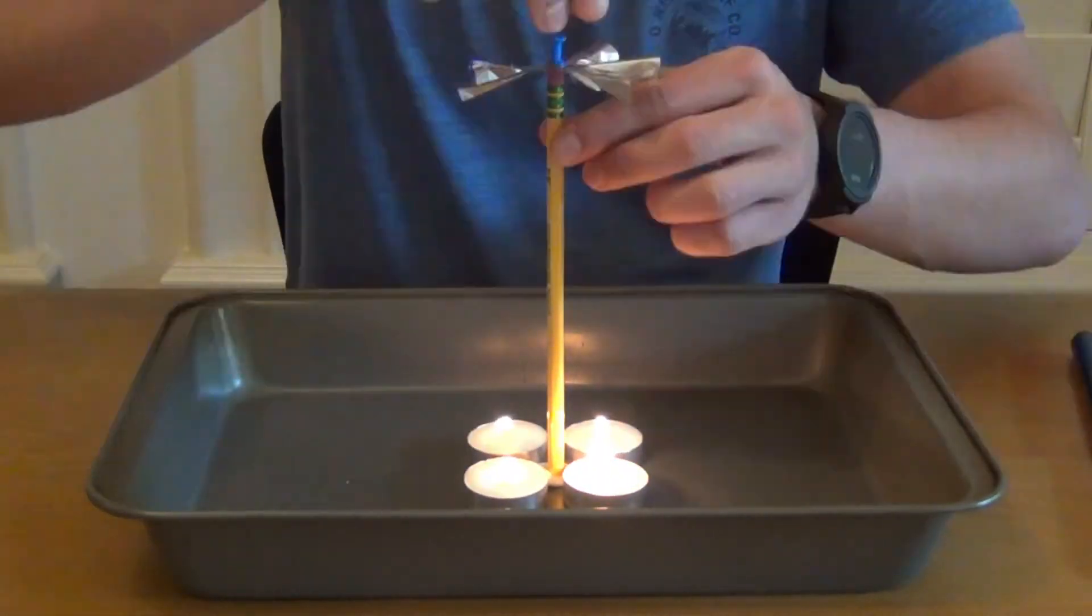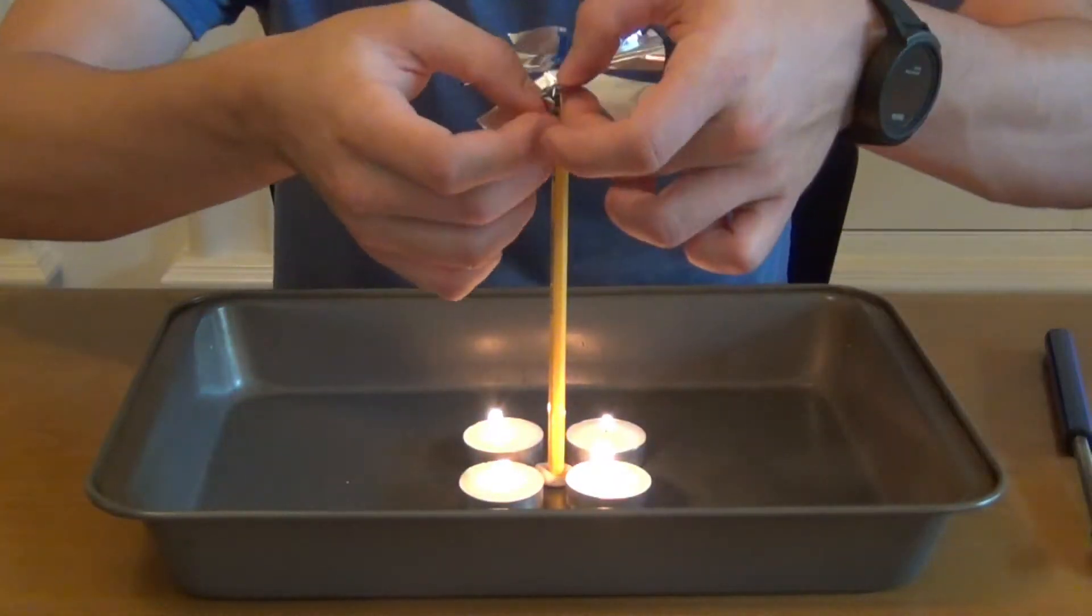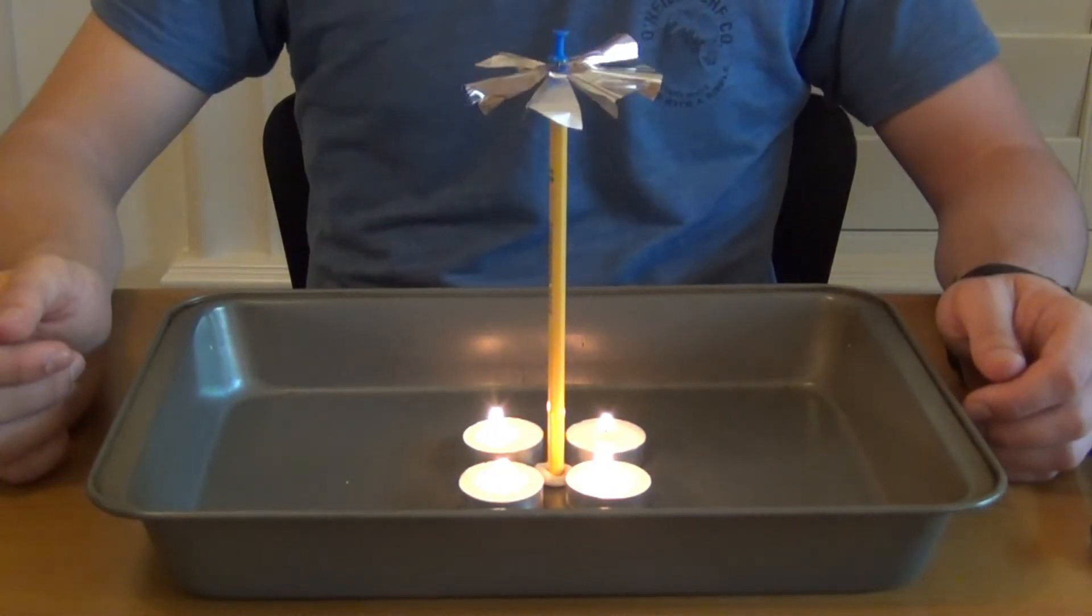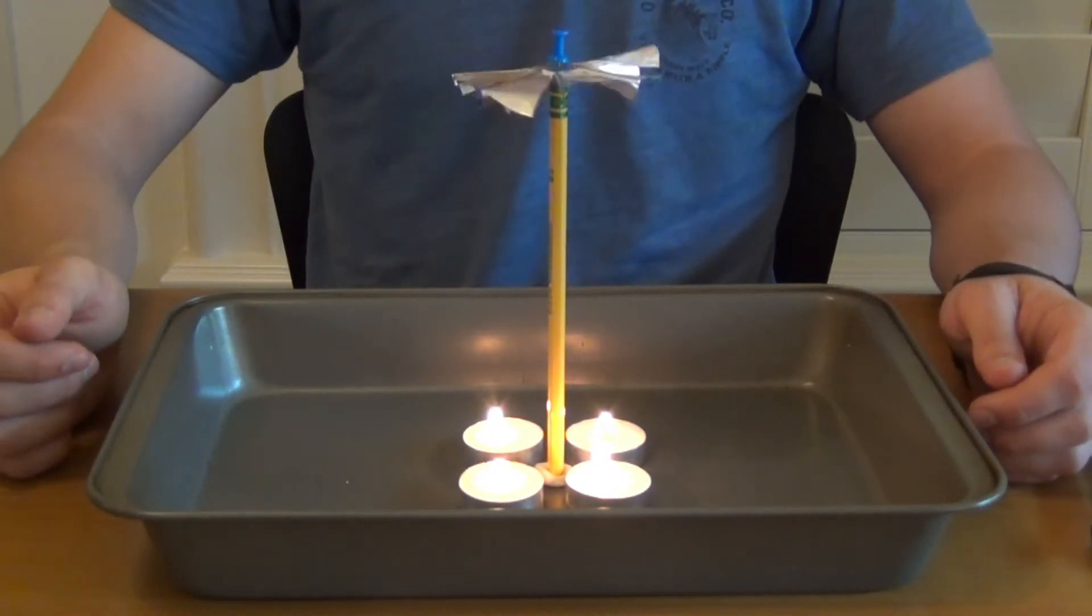Now you may have to wait a second, but if you've done everything correctly, the foil on top of the pencil should start spinning. There you go. You've just made your first convection pinwheel.